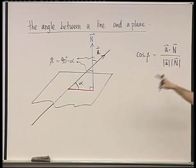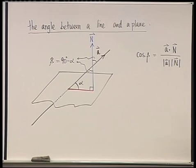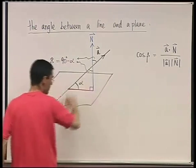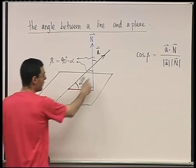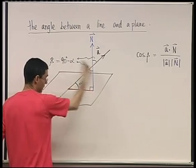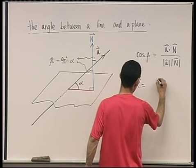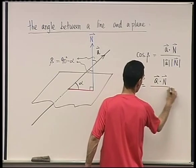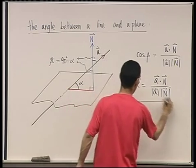We don't want beta, we want alpha. So you find beta and do 90 minus to get alpha. More elegantly: sine of alpha equals cosine of beta, because sine of alpha is the blue segment divided by the hypotenuse, which is precisely cosine of beta. So the formula is: **sin α = (a · n) / (|a| · |n|)**. This is the formula for the angle between a line and a plane.